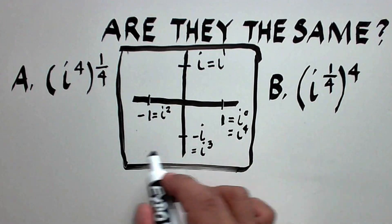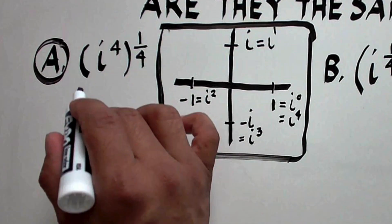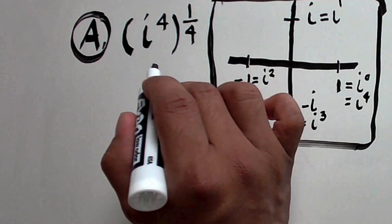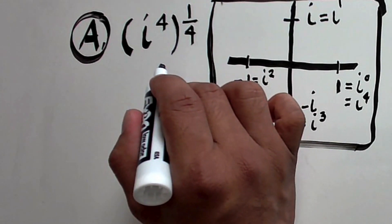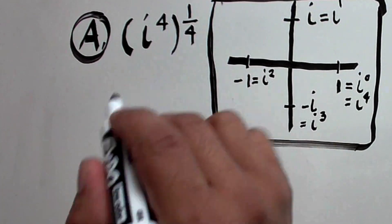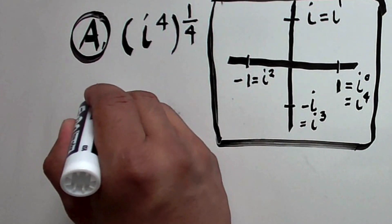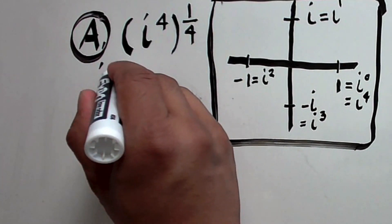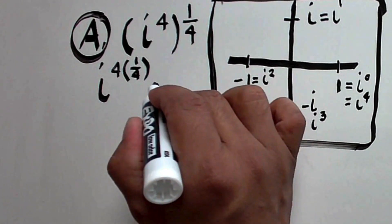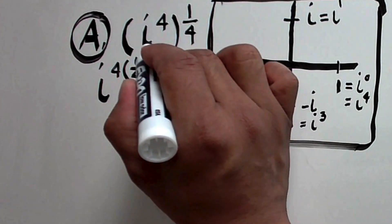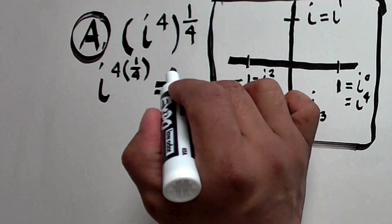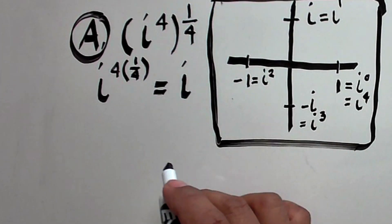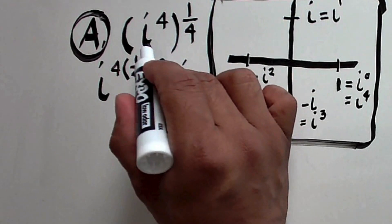Continuing the rotation, 1 is also equal to i to the fourth, i to the fifth, and so on. We'll refer to this later as we solve both problems. For Letter A, let's assume the law of exponents for real numbers also works for complex numbers. We can write this as i raised to the product of 4 times one fourth, giving i to the first, or simply i.